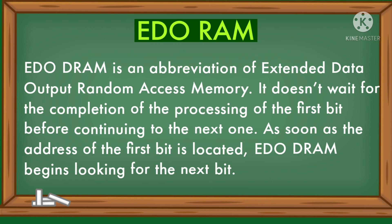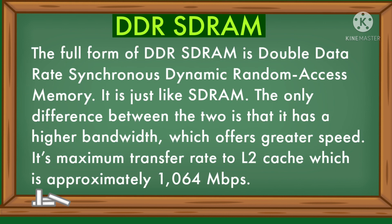EDO DRAM is an abbreviation of Extended Data Output Random Access Memory. It doesn't wait for the completion of processing the first bit before continuing to the next one. As soon as the address of the first bit is located, EDO DRAM begins looking for the next bit.